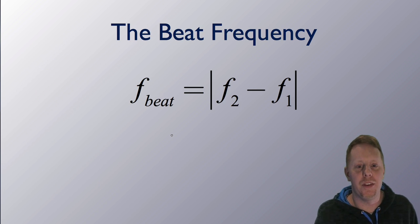The beat frequency itself, how quickly you get that alternating loud-soft pattern, can be calculated as the absolute value of the difference of the two frequencies of the waves that are interfering with each other. So if you had a 440 Hz wave and a 441 Hz wave, and they interfered with each other, your beat frequency would be 1 Hz.